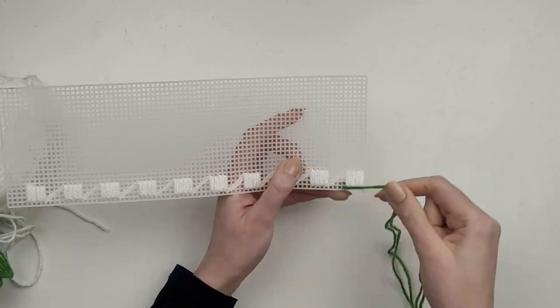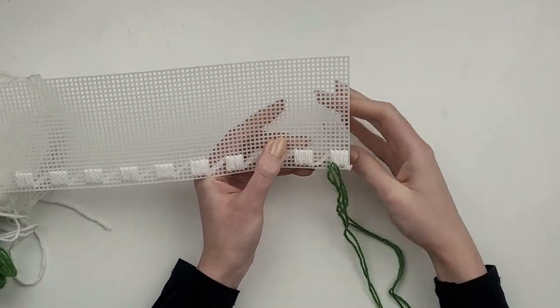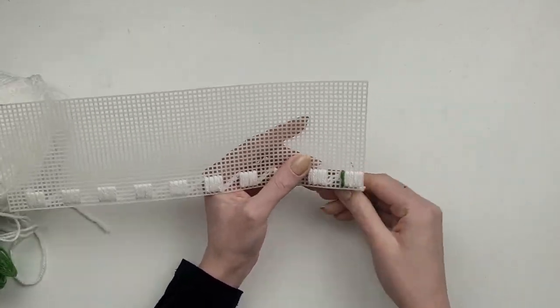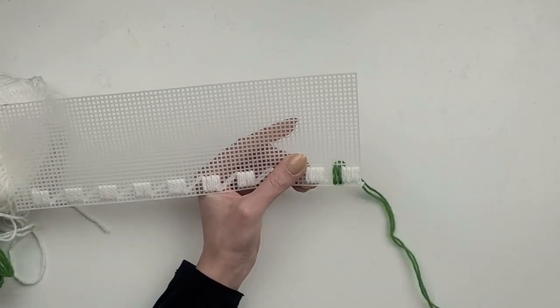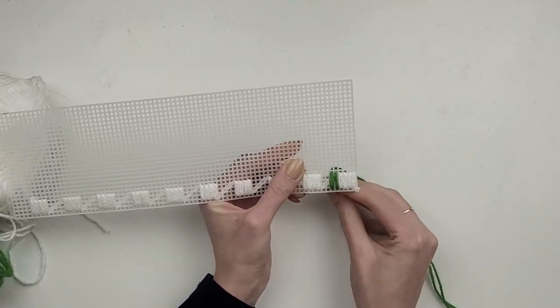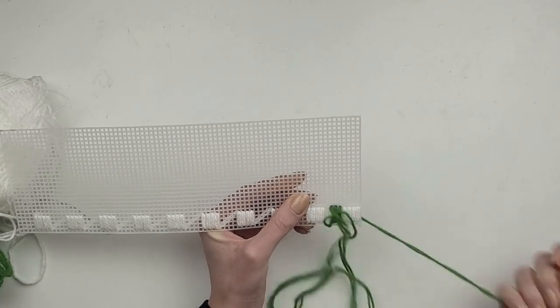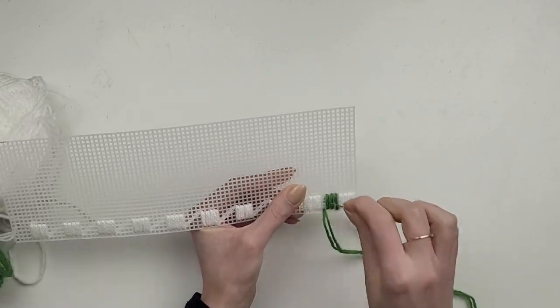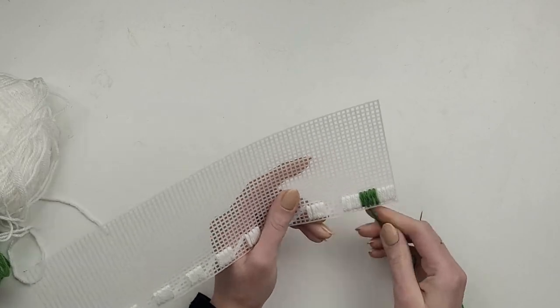Once the first row of white squares are done I took green yarn and started to create green squares. Again I start from the back and make four diagonal lines. Because I doubled my yarn up I only have to go once through each hole.